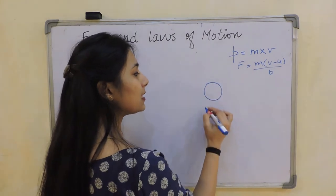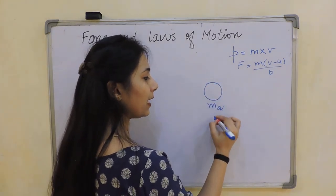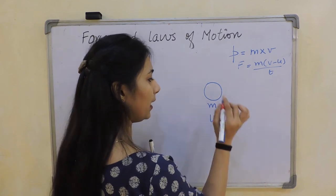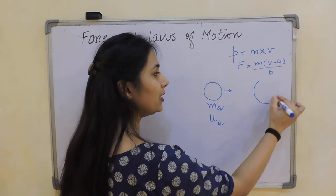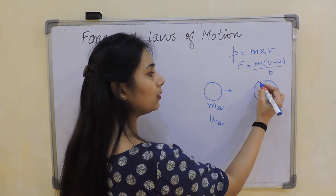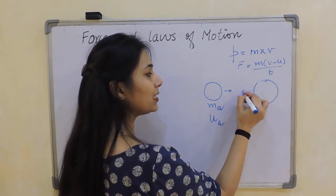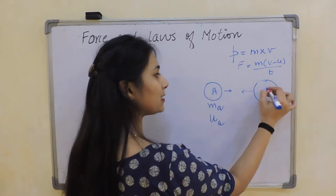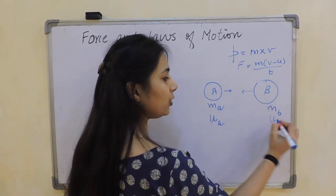Now what does this mean? For example, this is my body with mass mₐ and initial velocity uₐ, and it's moving in this direction. Similarly, I have another ball which is moving in this direction with mass m_b. This is ball A, this is ball B, with initial velocity u_b. This is before collision.